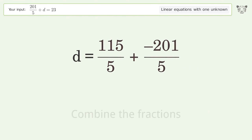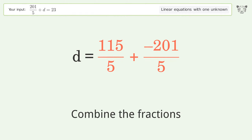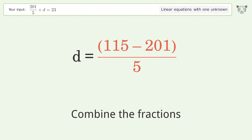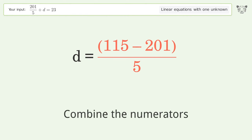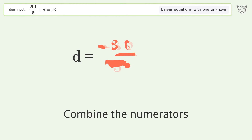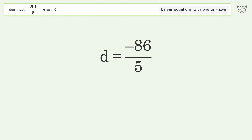Combine the fractions, then combine the numerators. And so the final result is d equals negative 86 over 5.